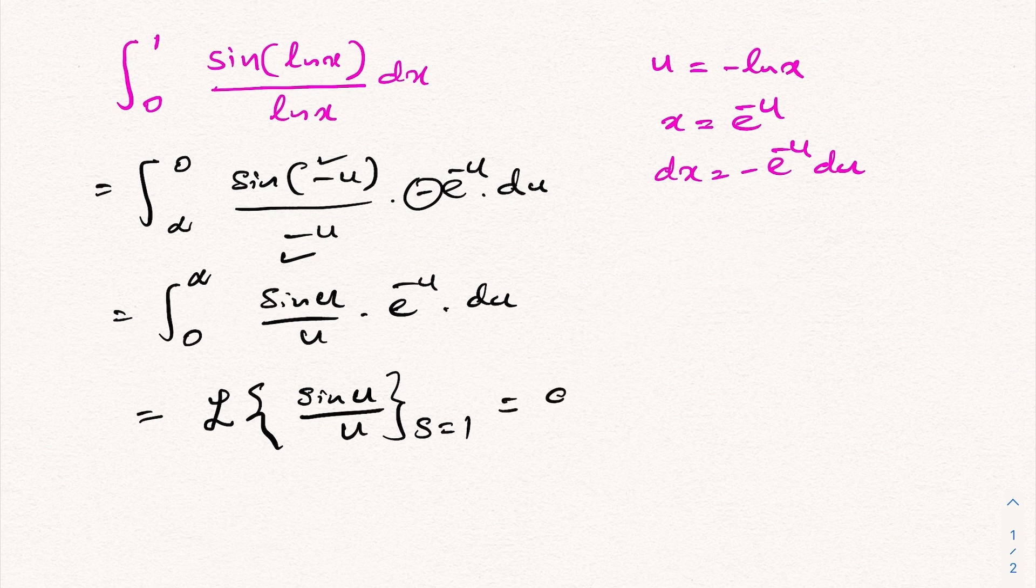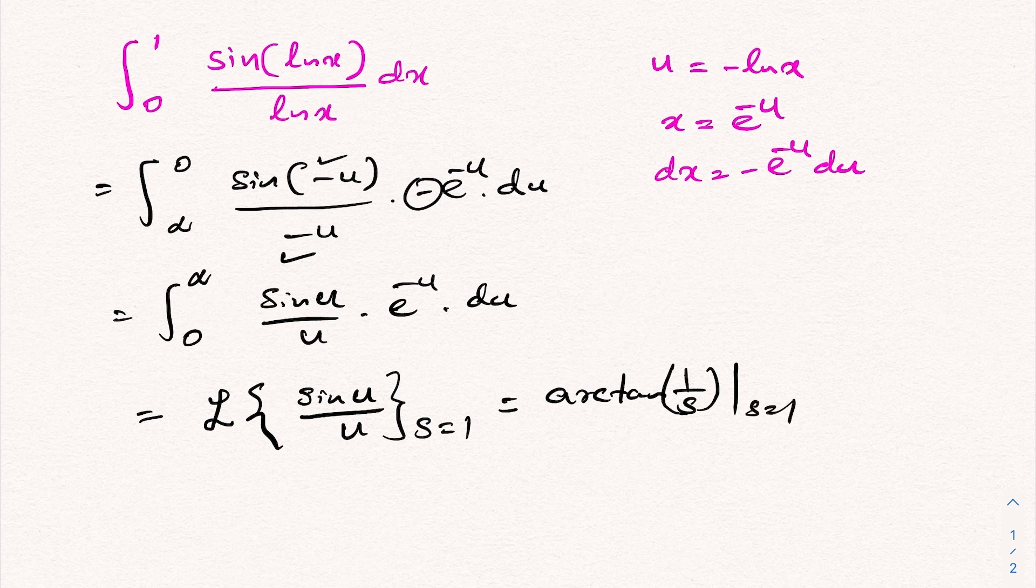The Laplace transform of sine of u over u is arctan of 1 over s. When s equals 1, we have arctan of 1, which equals pi over 4. So the answer is pi over 4. Thank you for watching.